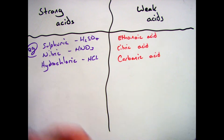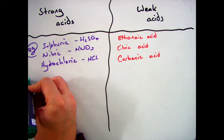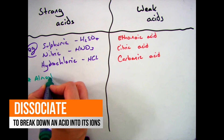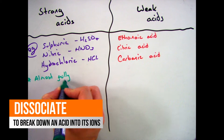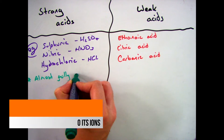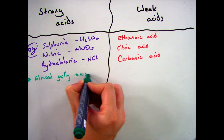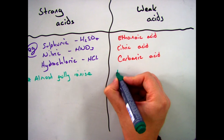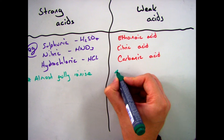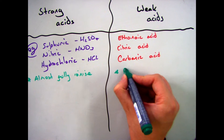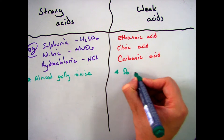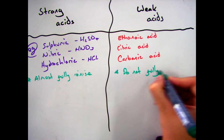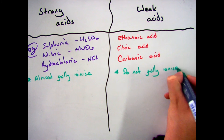The difference between the two is their ability to dissociate, which means break down into their ions. A strong acid will fully ionise — it will dissociate completely into H+ ions and then whatever the other anion is, like Cl-. Weak acids, on the other hand, do not ionise fully, so they don't fully break down into H+ ions.